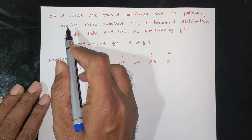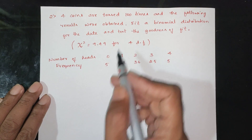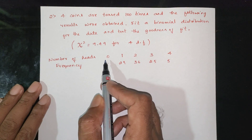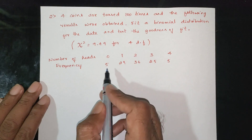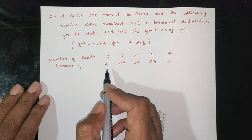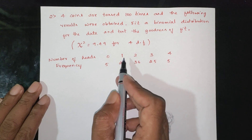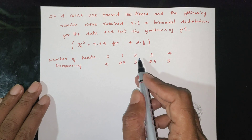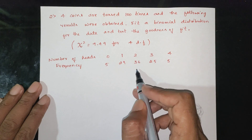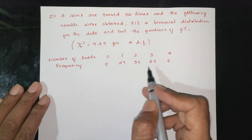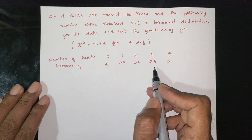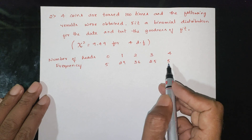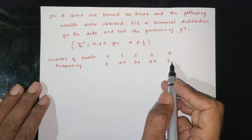Four coins are tossed 100 times. Zero heads occurred 5 times, one head occurred 29 times, two heads occurred 36 times, three heads occurred 25 times, and four heads occurred 5 times.